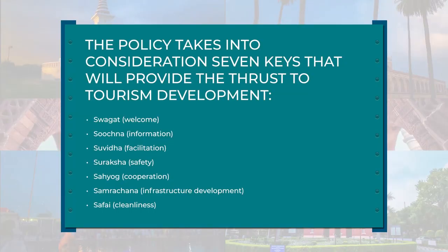The policy document takes into consideration seven key areas that will provide the thrust to tourism development. These are: Swagat (welcome), Suchana (information), Suvida (facilitation), Suraksha (safety), Sahayog (cooperation), Samarachna (infrastructure development), and Safai (cleanliness).